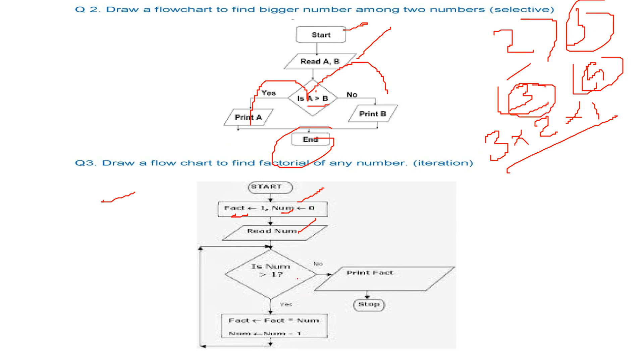If for example, if we take 3, then if the number is greater than 1, what we do? We assign fact to fact into num. That is fact is 1. So initially 1 into 3 will be assigned to fact. Then we reduce the number by 1. That is now 3 has become 2.